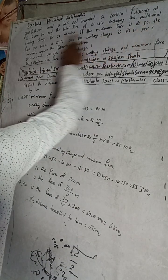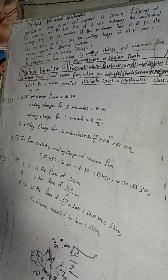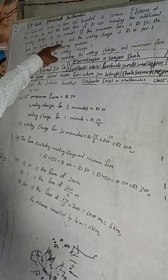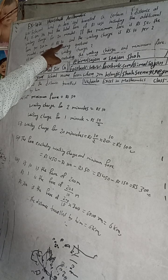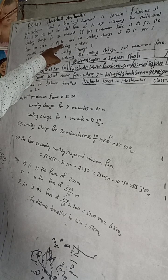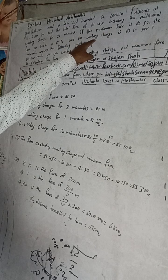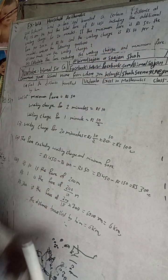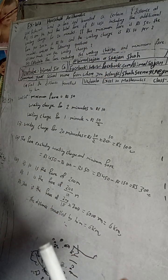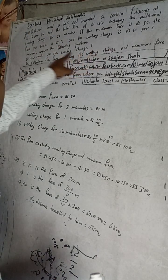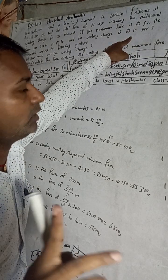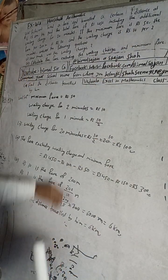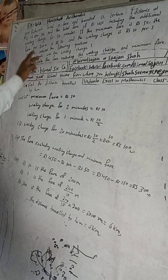The fare for 200 meters is Rs 10, and the waiting charge is Rs 10 for 2 minutes. So the waiting charge is Rs 10 for 2 minutes — we need to find how much the waiting charge is for 20 minutes.